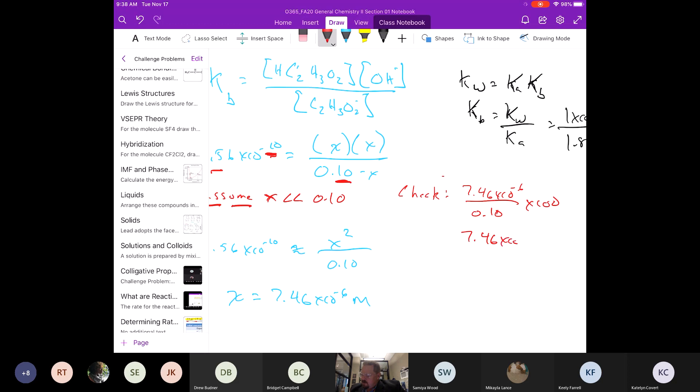When we do this, we get 7.46 times 10 to the negative 3%, which means that this number is much less than 1% of that number. So we can assume that this is going to be okay. And I would say that this assumption passes.